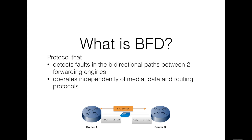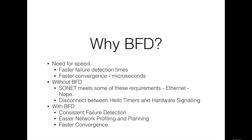It operates independently of media, data protocols, and routing protocols. An increasingly important feature of networking equipment is the rapid detection of communication failures between adjacent systems in order to more quickly establish alternative paths. Detection can come fairly quickly in certain circumstances when the data link hardware comes into play.